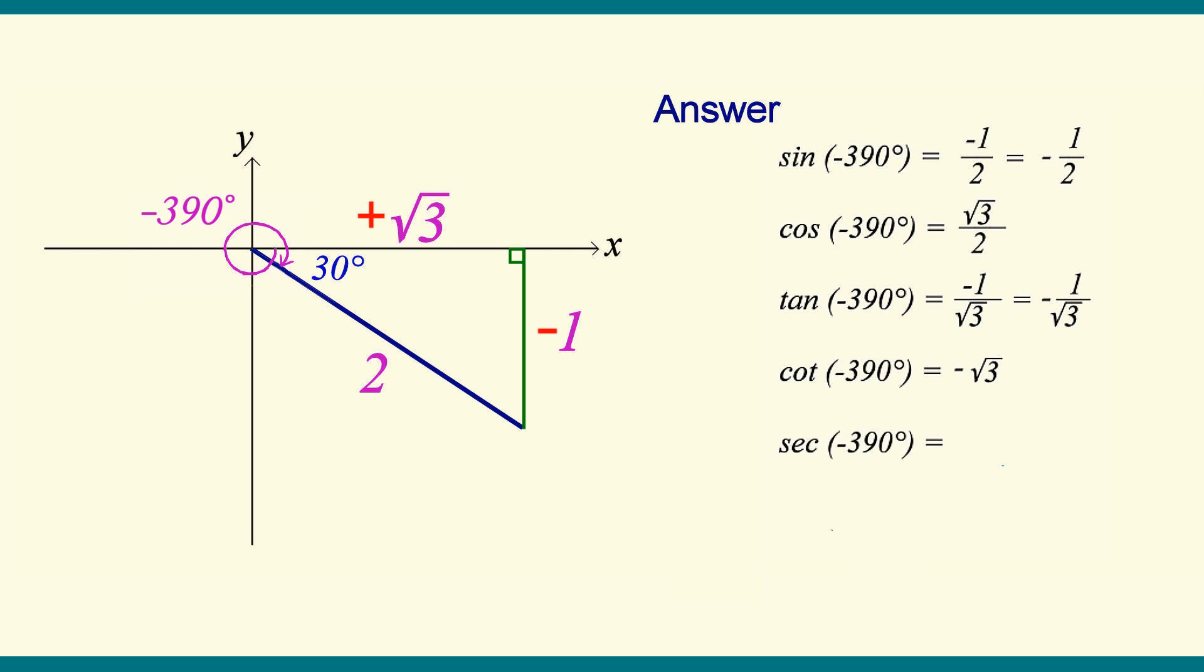Turn the cosine upside down, we get the secant. So secant is 2 over square root 3. And finally, cosecant is 1 over the sine. We get negative 2.